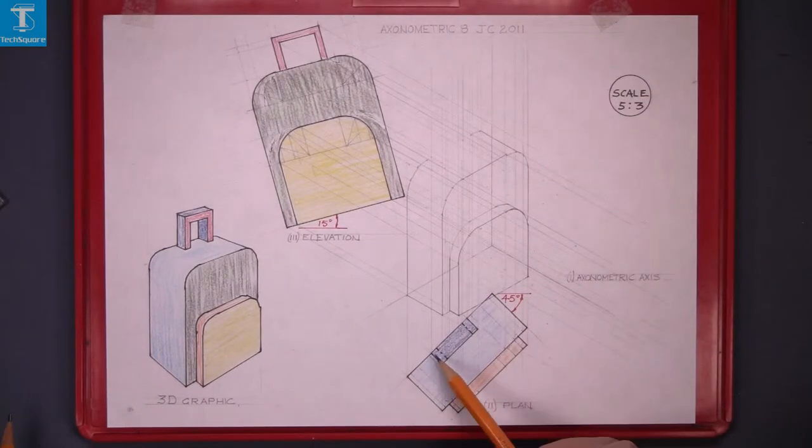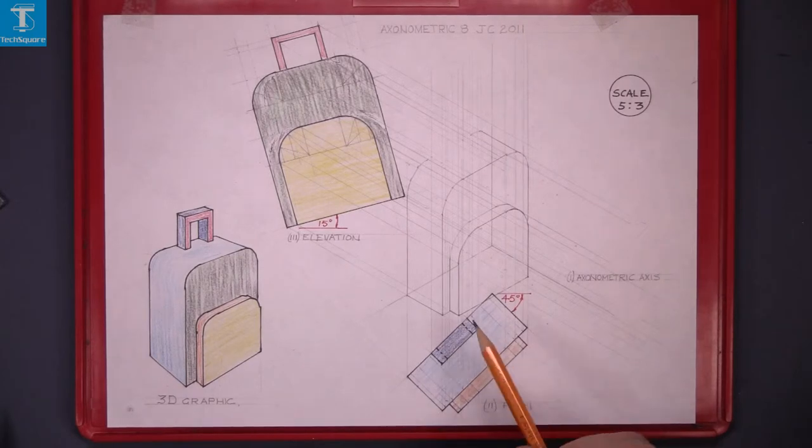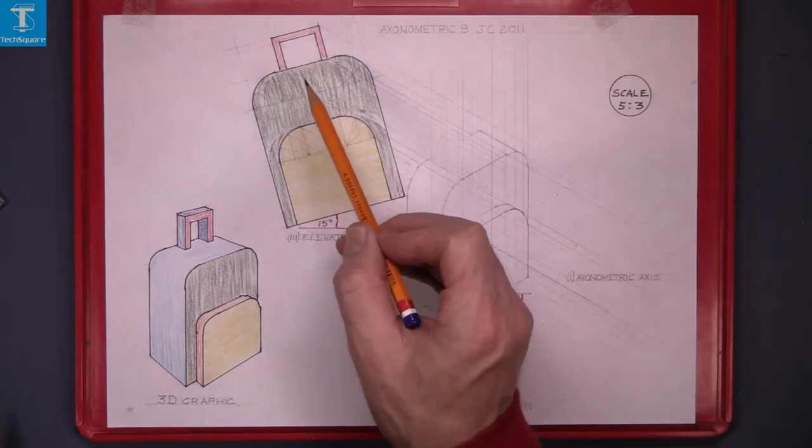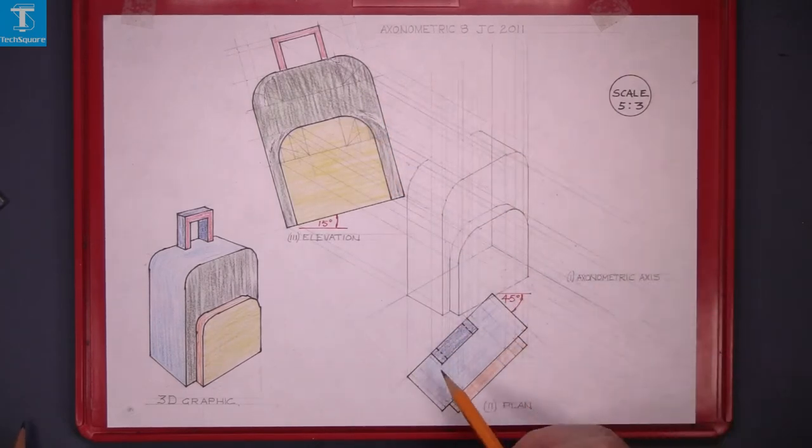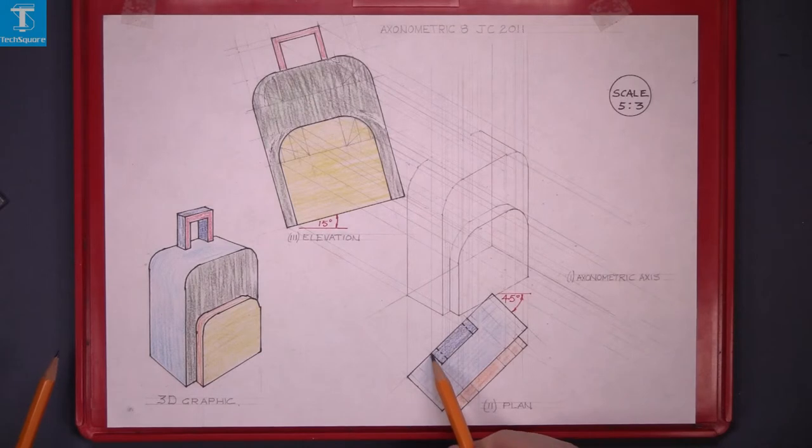Now the handle. Plan and elevation of the handle here. So we'll project the points down at 30 degrees and vertically up. There's three points here in the plan that I want. These first three points we're going to look at.